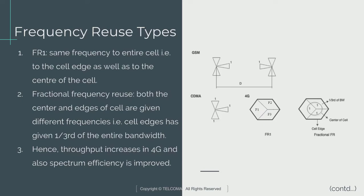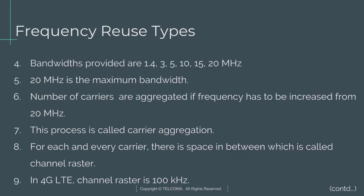In fractional frequency reuse, the cell area is divided into two regions: a central region where all of the frequency band is available, and a cell edge area where only a small fraction of the spectrum is available. The spectrum dedicated for the cell edge may also be used in the central region if it is not being used at the cell edge. The lack of spectrum at the cell edge may result in much reduced Shannon capacity for that region. This is overcome by allocating high power carriers to users in this region, thus improving the SINR and hence the Shannon capacity. This also increases the throughput and improves spectrum efficiency.